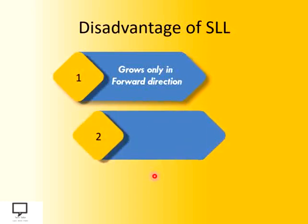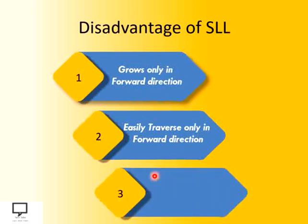The second disadvantage is, as it grows only in the forward direction, we can traverse easily in the forward direction. But if I want to traverse the linked list in the backward direction, then it is a little bit difficult to traverse in the backward direction as no reverse link is available with the SLL. By taking consideration of all these disadvantages of SLL, the doubly linked list came into the picture.